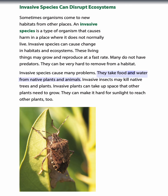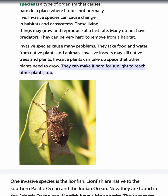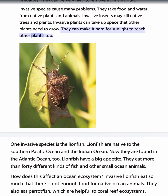Invasive species cause many problems. They take food and water from native plants and animals. Invasive insects may kill native trees and plants. Invasive plants can take up space that other plants need to grow, and they can make it hard for sunlight to reach other plants.